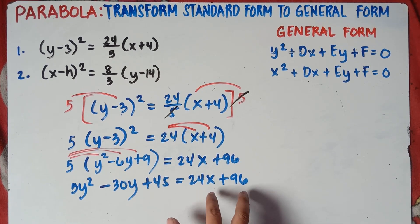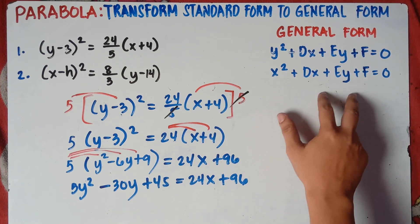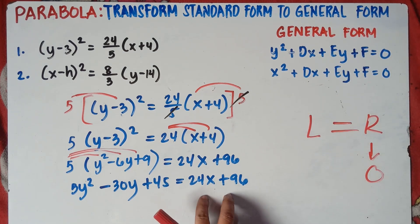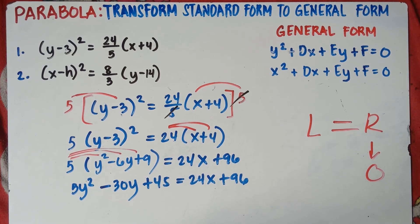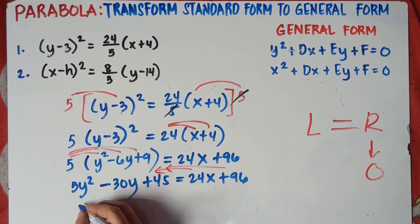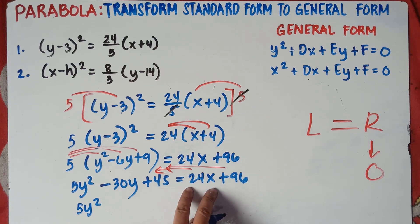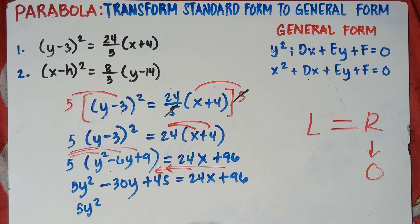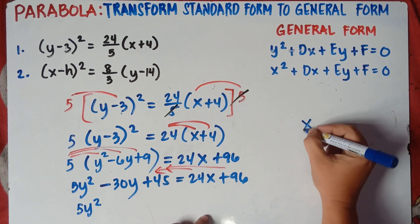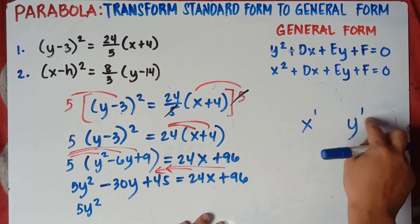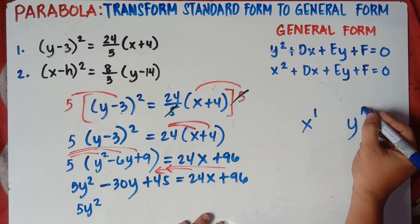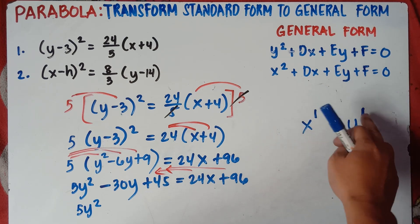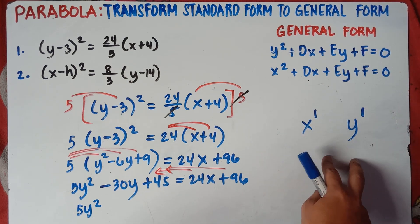Now transpose the right side to the left, because all terms must be on the left side and the right side equals zero. Transpose 24x and 96 from right to left. Also, remember: x comes before y when they have the same exponent, because in algebra letters are arranged alphabetically. So x comes before y.